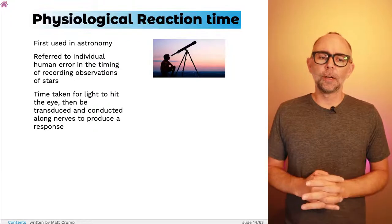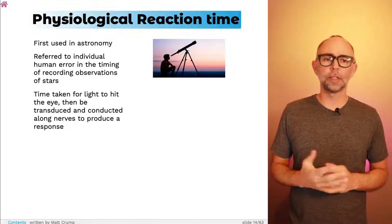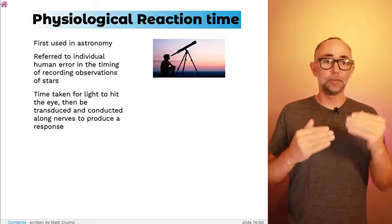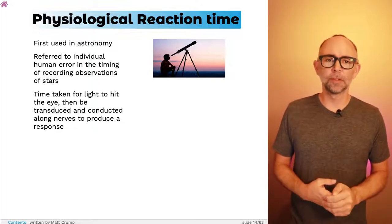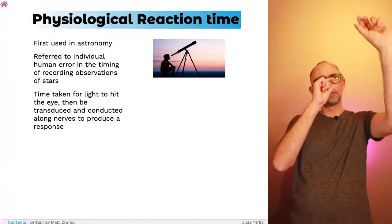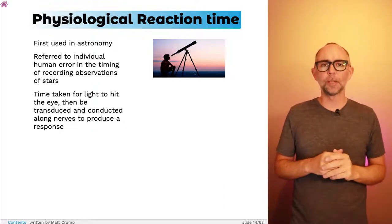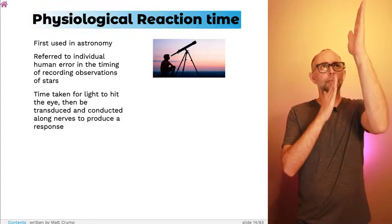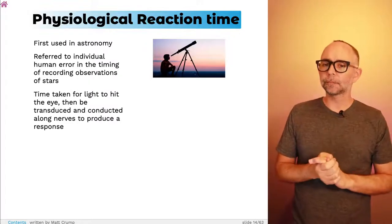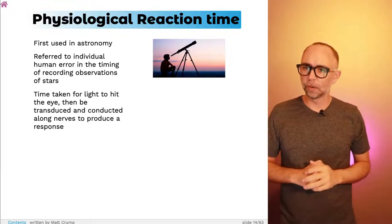He was relying on some earlier work using reaction times. It turns out that before psychologists were interested in reaction times, these were first being measured in astronomy. An astronomer looking through a telescope would try to make measurements about where a particular celestial body was, and they could use the timing of their observations to predict where different things would appear in the sky.